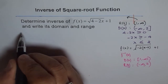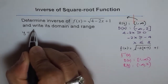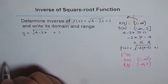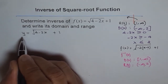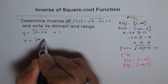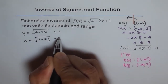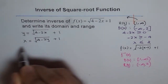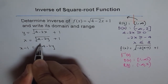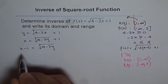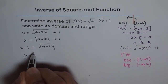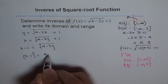To start, we write y equals the square root of 4 minus 2x plus 1. To find the inverse, we swap x and y, giving us x equals the square root of 4 minus 2y plus 1. We take 1 to the other side, so x minus 1 equals the square root of 4 minus 2y. Now we square both sides, giving us (x minus 1) squared equals 4 minus 2y.